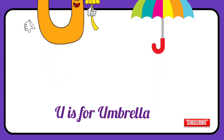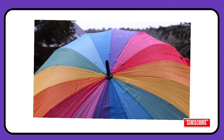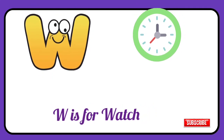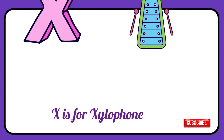U is for Umbrella, uh-uh-Umbrella. V is for Violin, v-v-Violin. W is for Watch, w-w-Watch. X is for Xylophone, z-z-Xylophone.